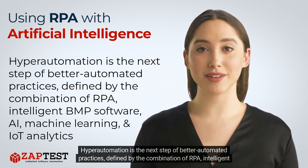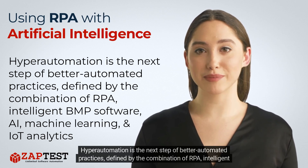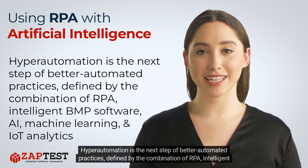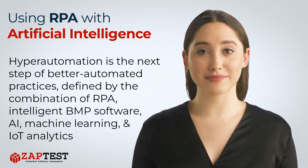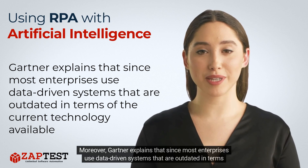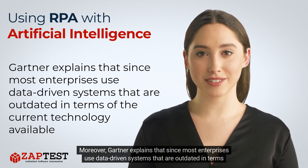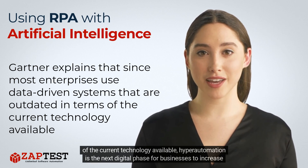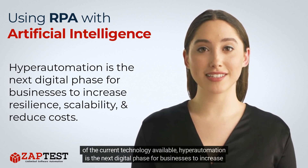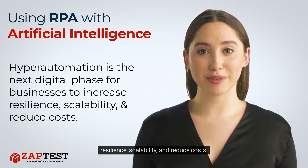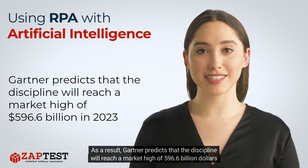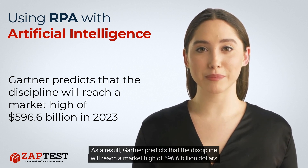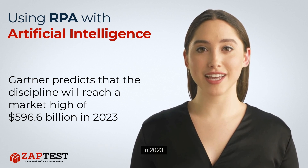Hyperautomation's primary goal is to continue growth without hindrance. It is the next step of better automated practices, defined by the combination of RPA, intelligent BPM software, AI, machine learning, and IoT analytics. Moreover, Gartner explains that since most enterprises use data-driven systems that are outdated in terms of current technology, hyperautomation is the next digital phase for businesses to increase resilience, scalability, and reduce costs. As a result, Gartner predicts the discipline will reach a market high of $596.6 billion in 2023.